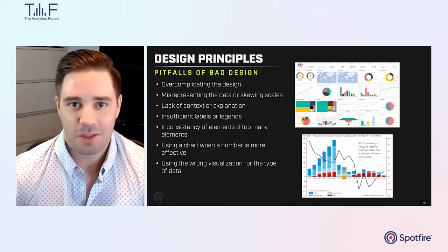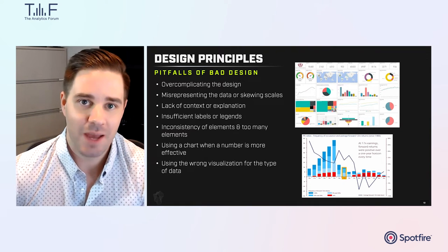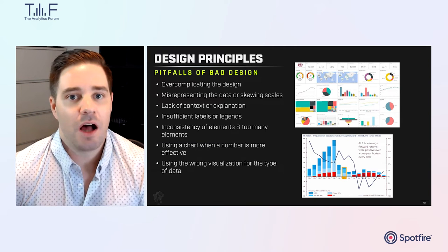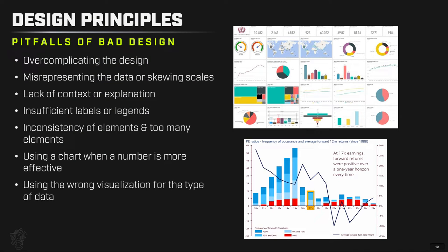Now let's talk about the pitfalls of bad design and things to avoid. First is overcomplicating the design. I'm using an image of a Power BI dashboard as an example of a complicated design — it's trying to do too much on one screen. Looking at the bottom image, we can see a stacked bar chart with multiple colors, multiple axes, a title, and a text call-out — just too much going on. Conveying too many concepts in a single visual creates information overload for users.